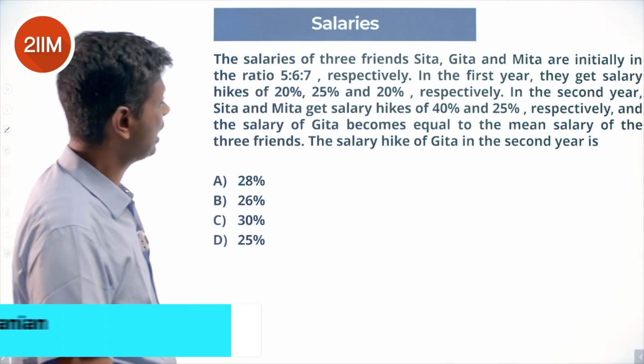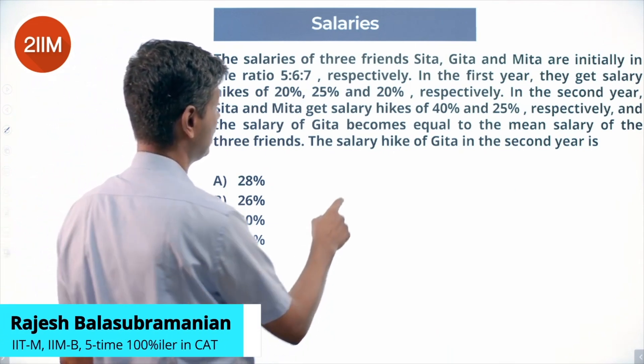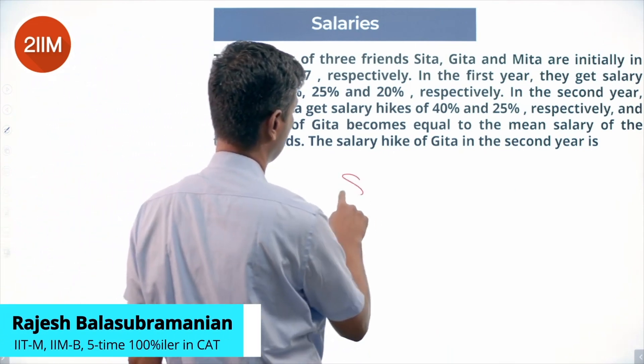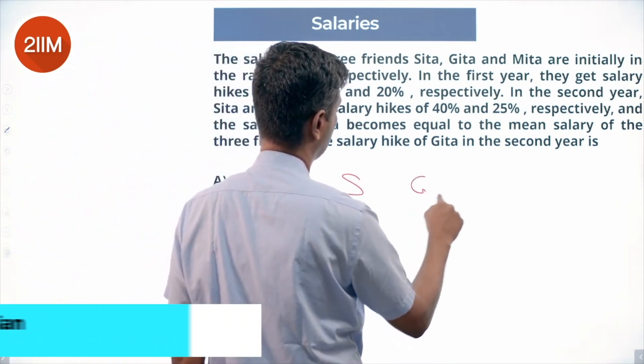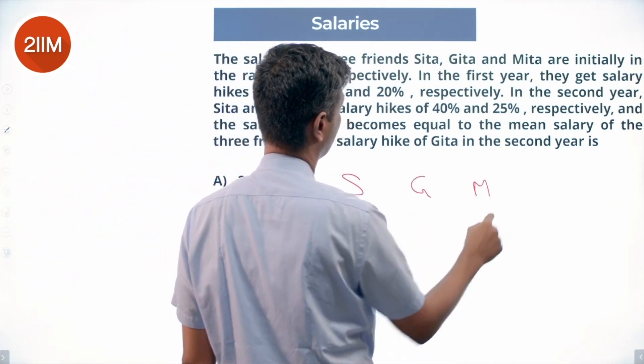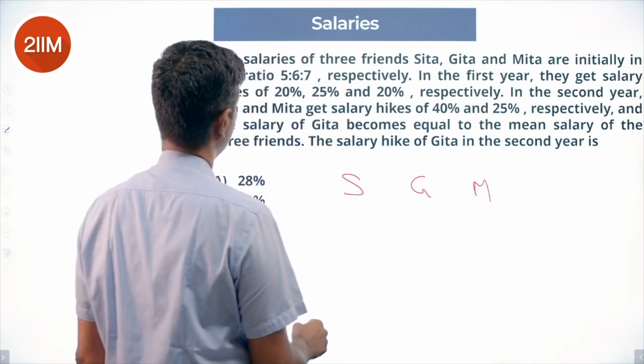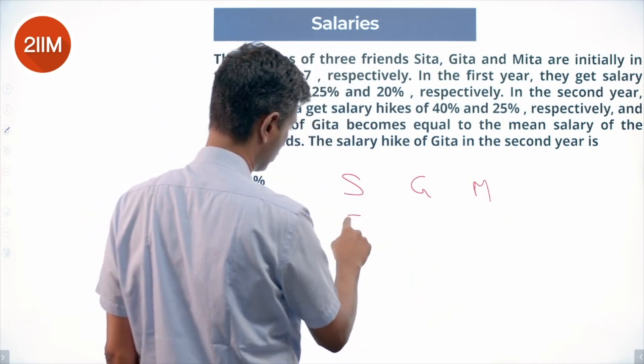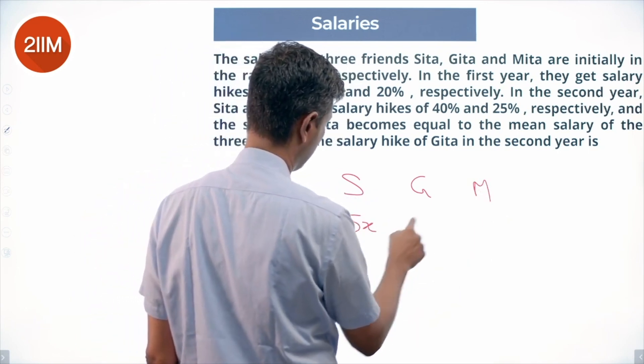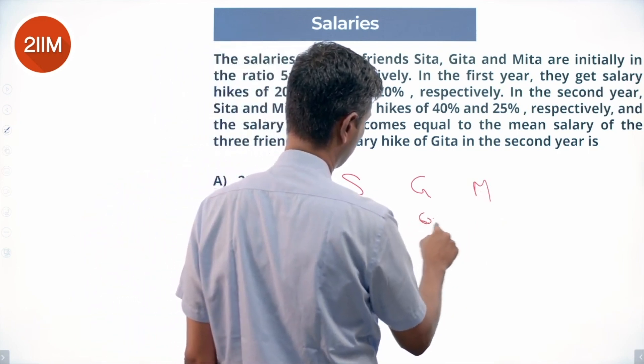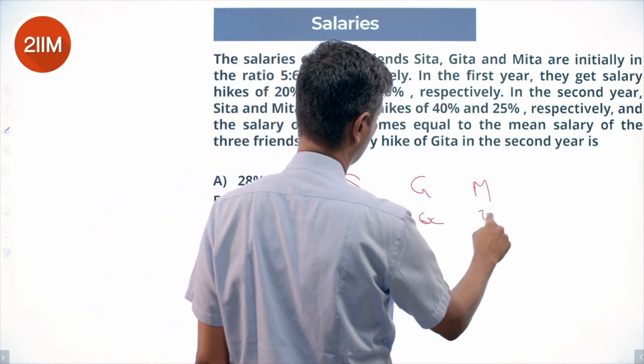The salaries of three friends Sita, Geeta and Meeta are in the ratio of 5:6:7. We represent these as 5x, 6x, and 7x respectively.